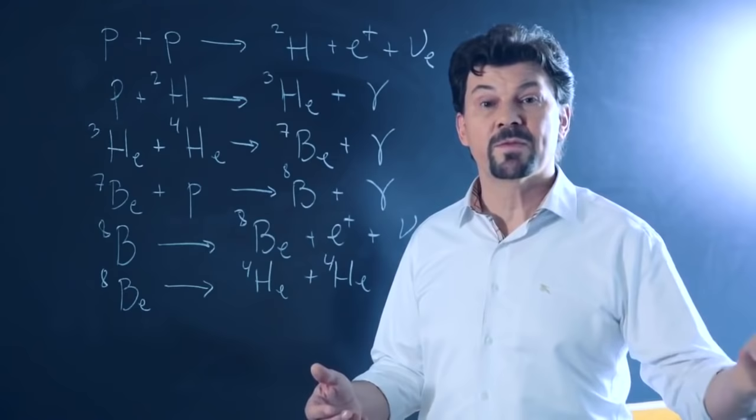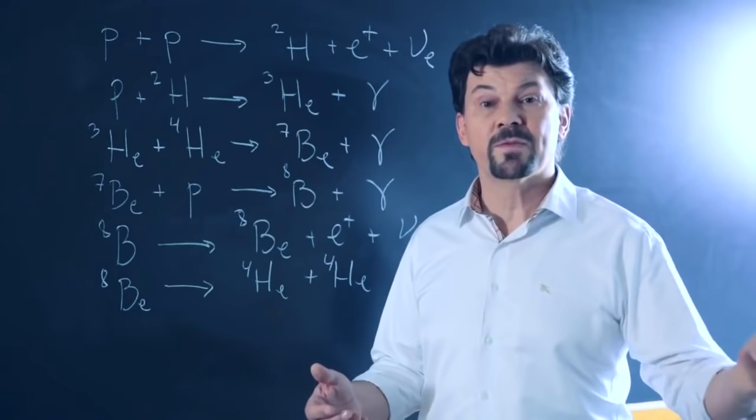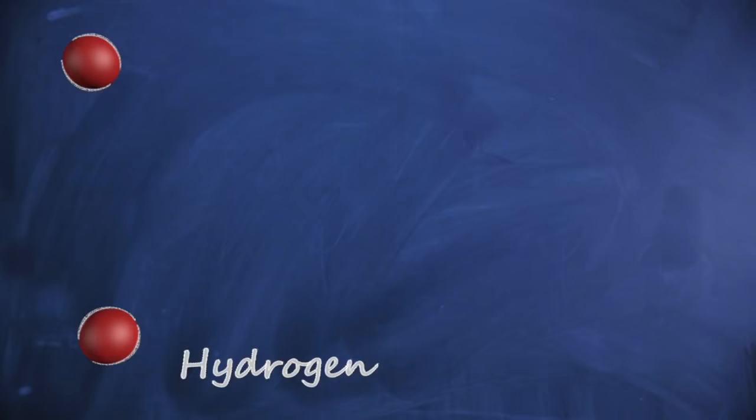Neutrinos change type when they come from the Sun to the Earth. We also say that they change flavour. We don't know why, but neutrinos and all particles come in three families.